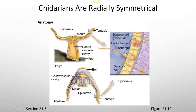This is a basic diagram of the anatomy. You have the epidermis on the outside, then you have tentacles, and then there's a mouth part with a gastrovascular cavity, and there's a foot.